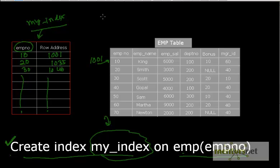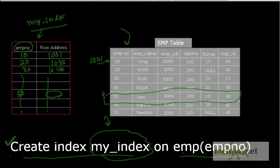Now whenever you give the query SELECT * FROM emp WHERE employee_number = 50, instead of scanning the full table, Oracle first looks at the index storage area, which is much smaller and faster to search. It finds employee number 50, gets the corresponding row ID, then directly goes to that row ID and fetches the record. This is called index access — accessing a row using an index.